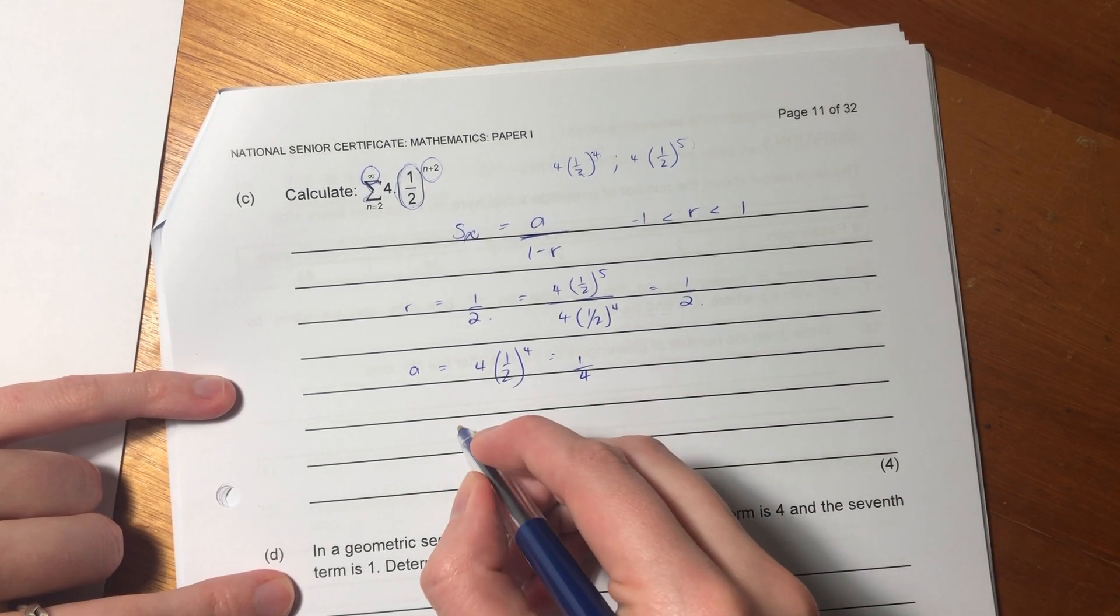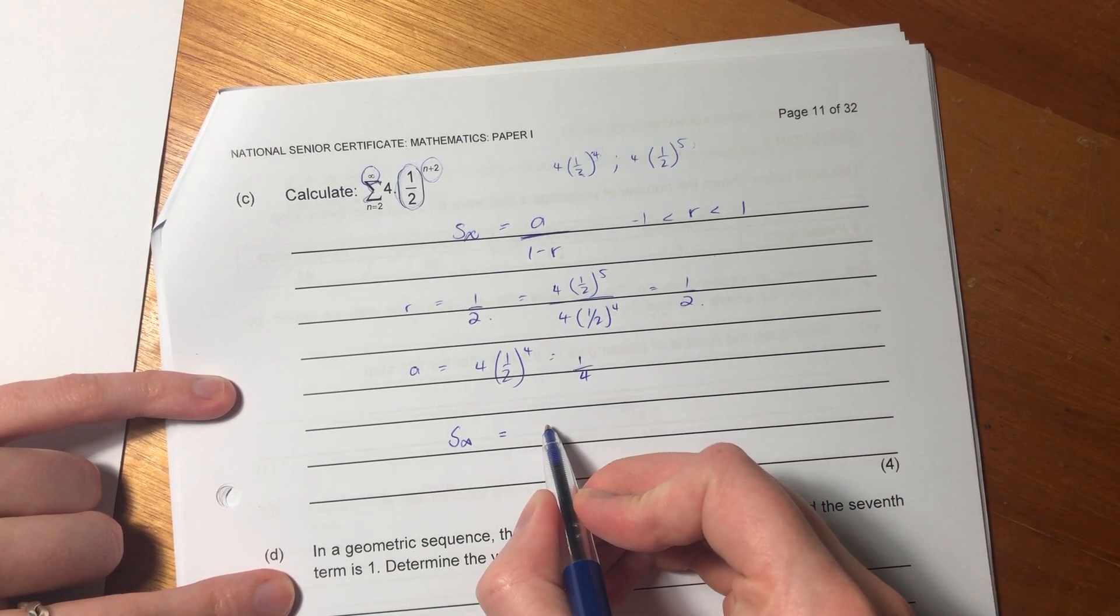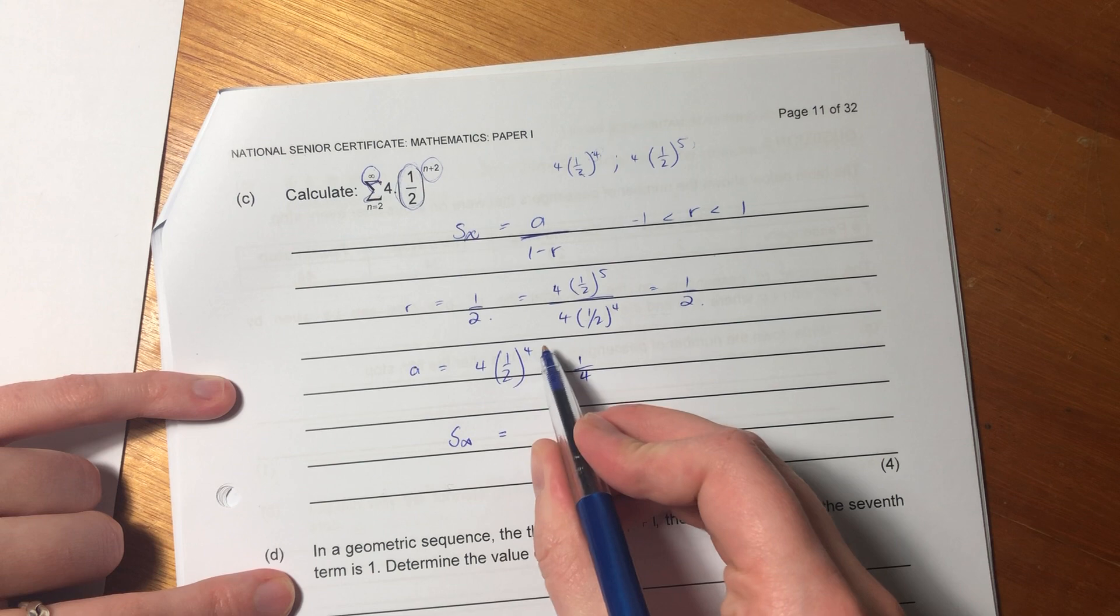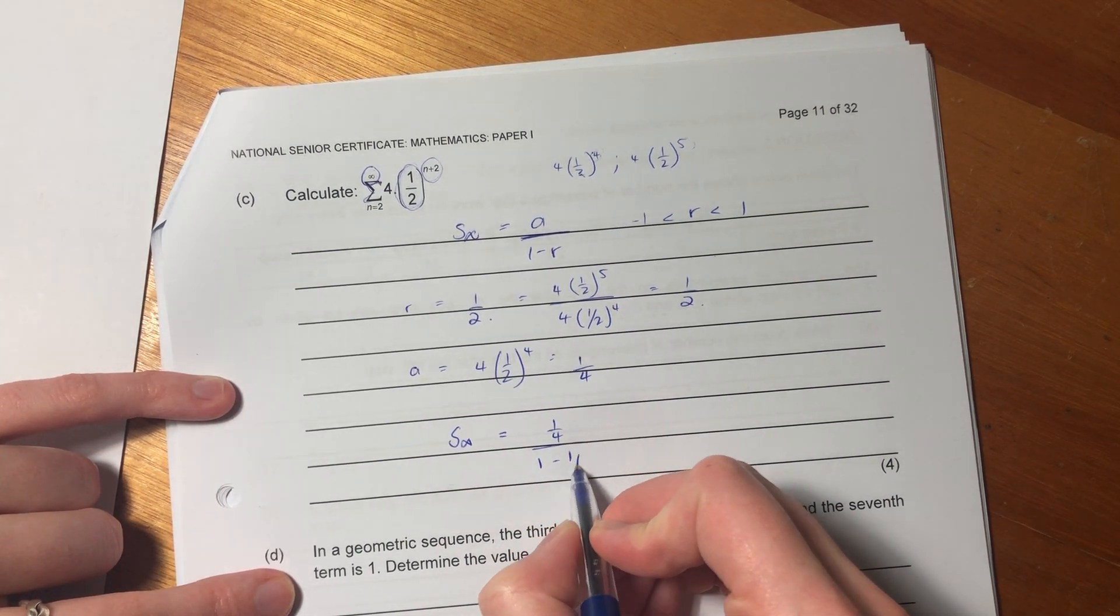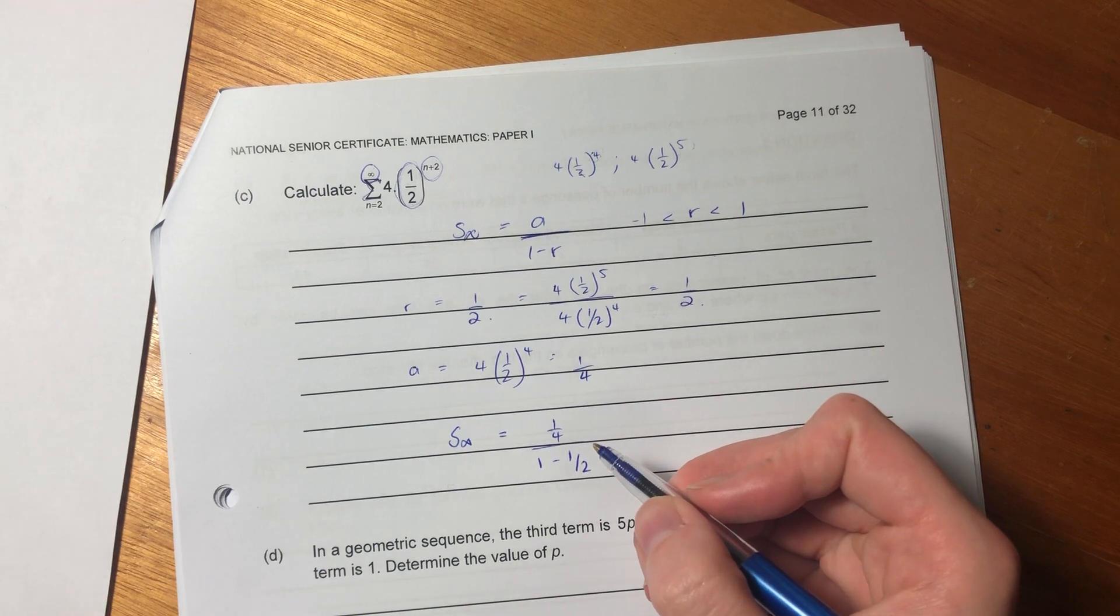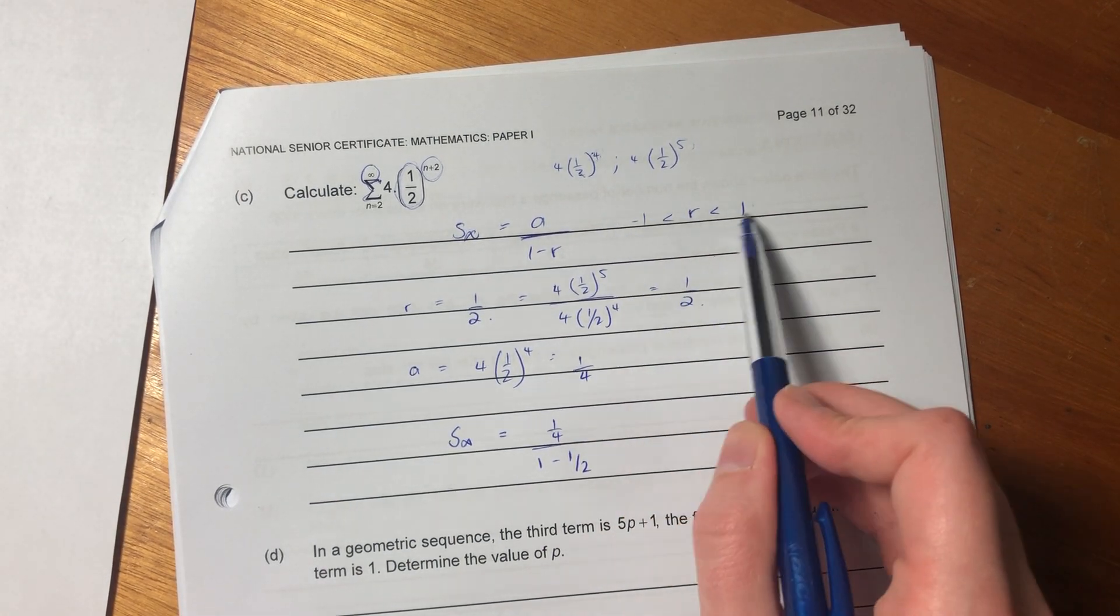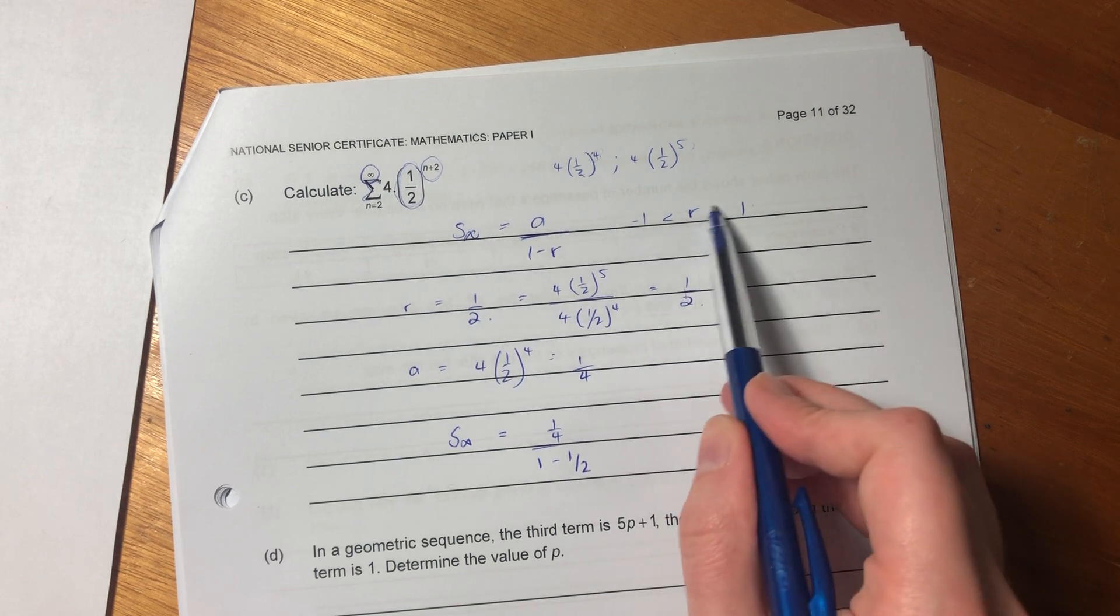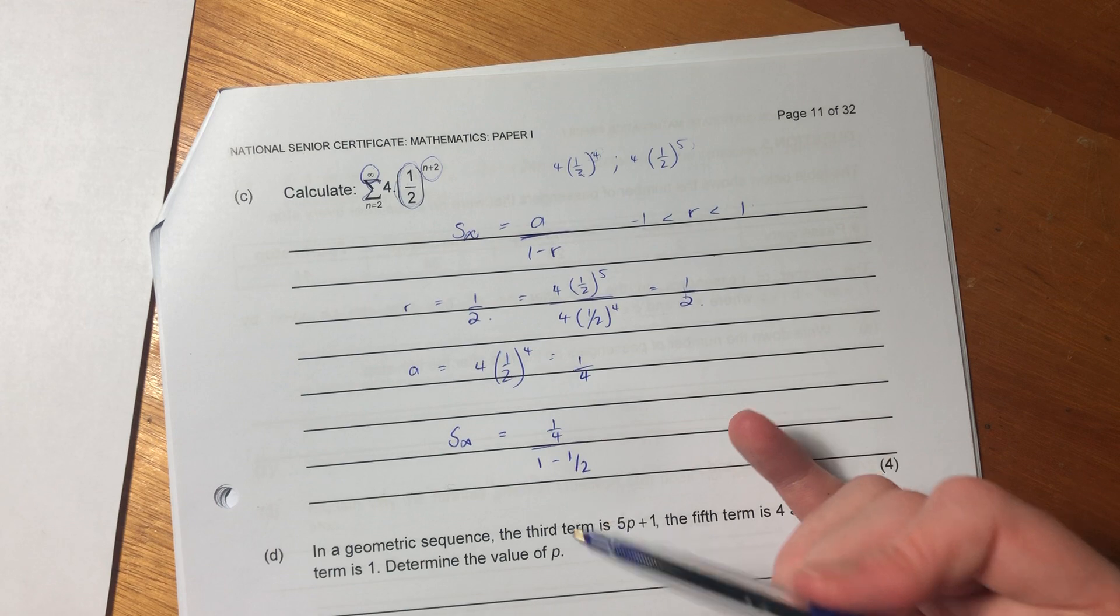So we're going to have S to infinity, sum to infinity. We're going to say, what are we going to say? Where's A? 1 over 4 over 1 minus 1 over 2. So we know that if our ratio is between these two intervals, it's converging. That was one of the things that we learned when we looked at the ratio.